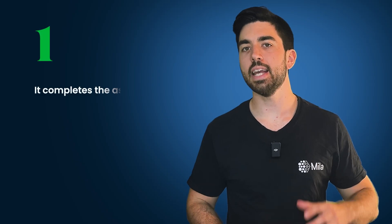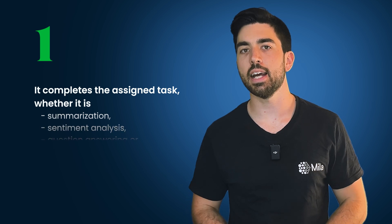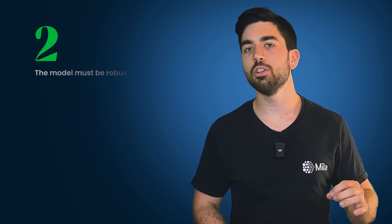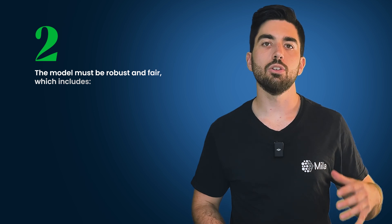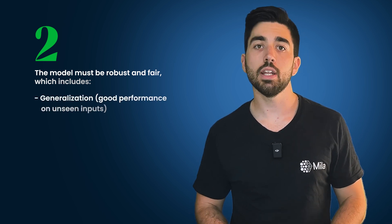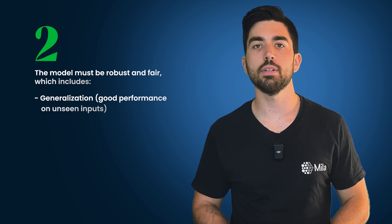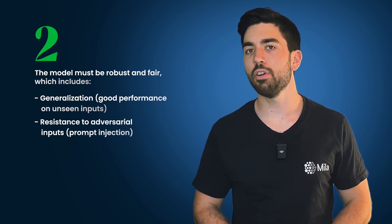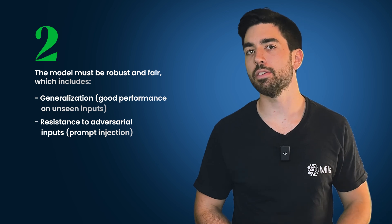When using an LLM, we expect two things from the model. First, that it completes the assigned tasks, whether it's summarization, sentiment analysis, question answering, or anything else LLMs can do. Second, that the model is robust and fair. This includes its performance on unexpected or previous unseen inputs, especially those that differ significantly from its training data, and adversarial inputs designed to mislead the model, like prompt injection, for example, which we've covered in previous videos.